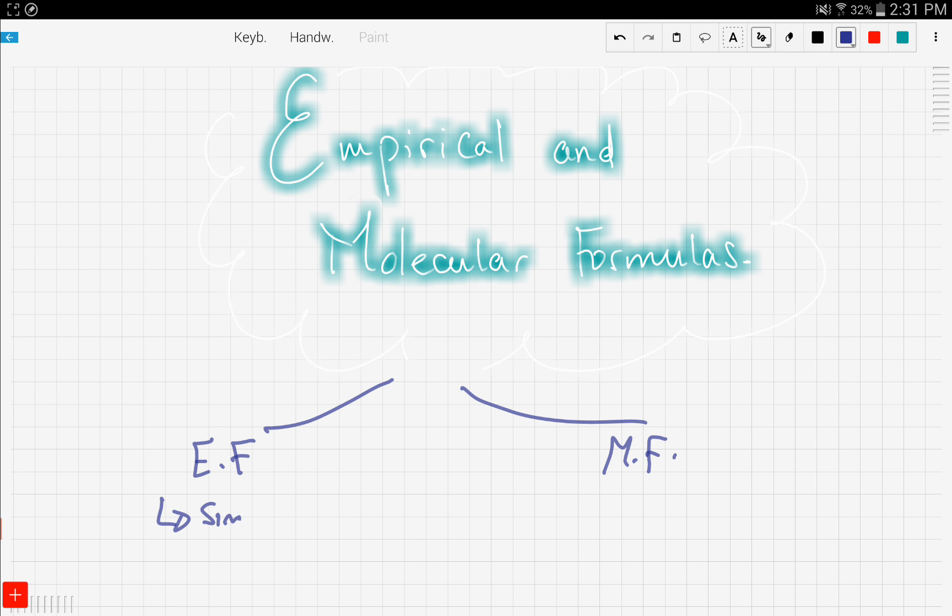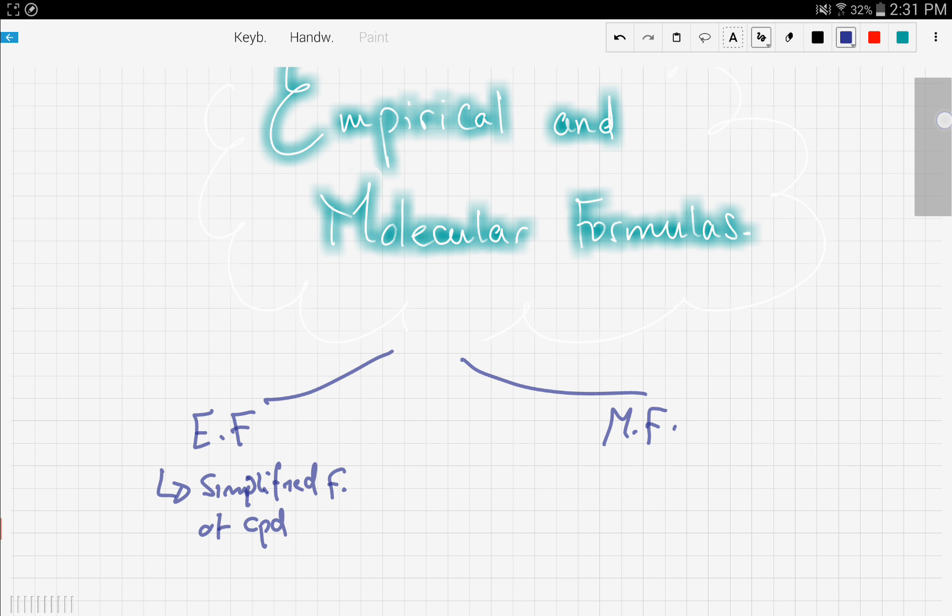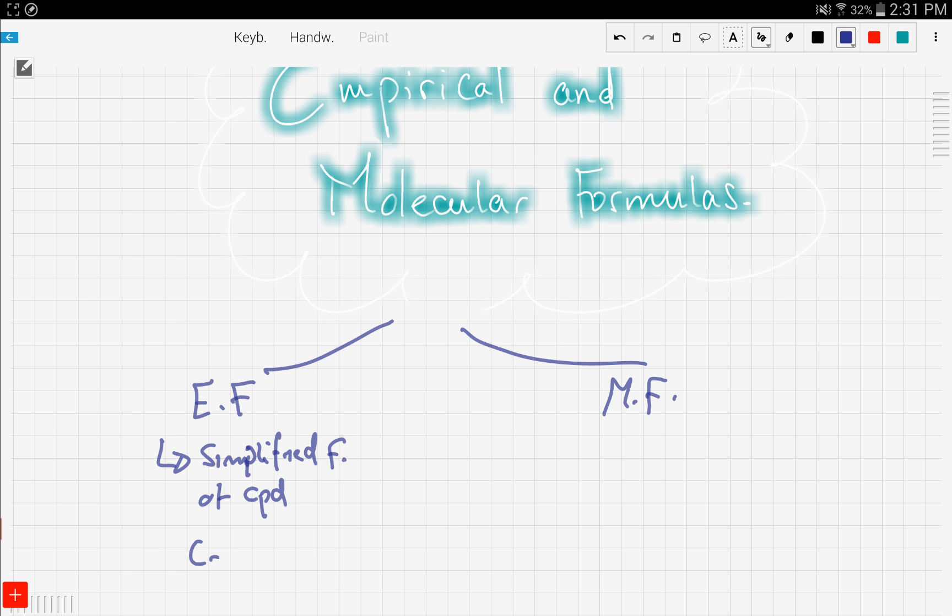For example, C3H8 is a compound that cannot be simplified more, while molecular formulas such as C6H16 can be simplified by dividing by 2 to become C3H8. So this is the empirical formula and that is the molecular formula. The empirical formula is basically a simplified formula of the compound.